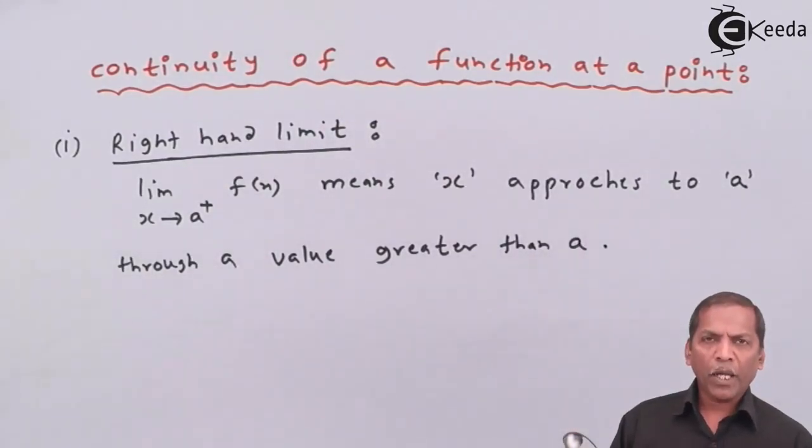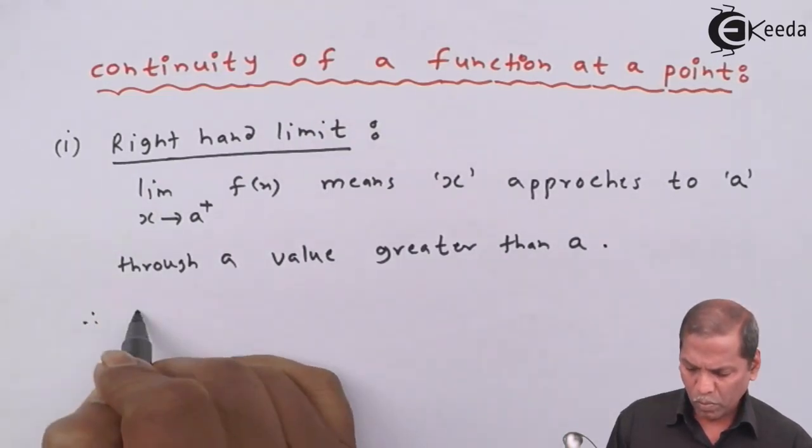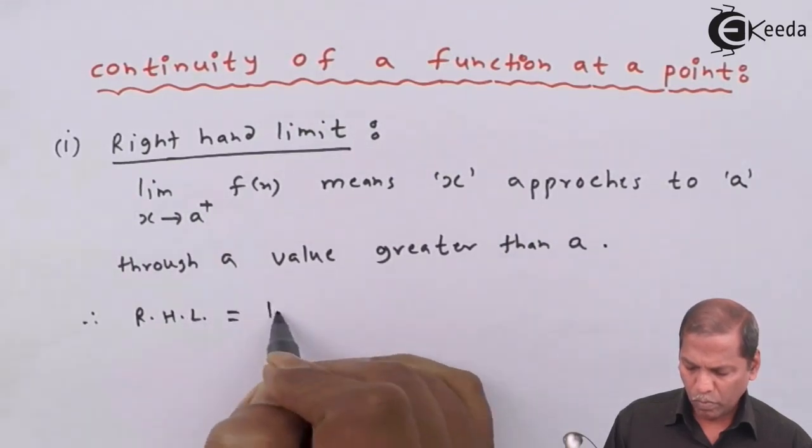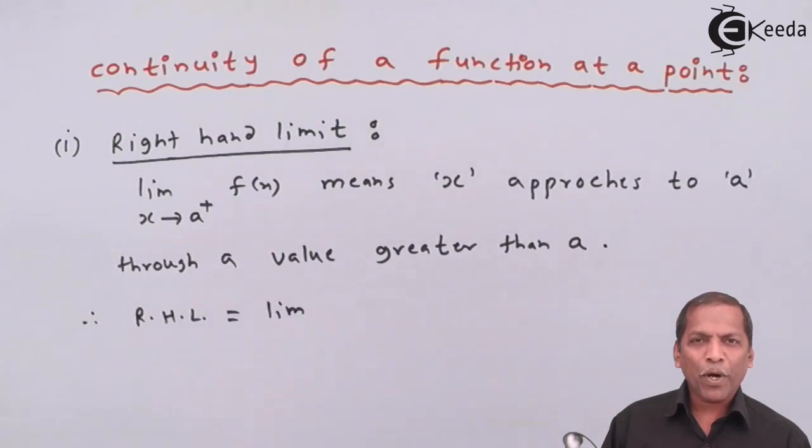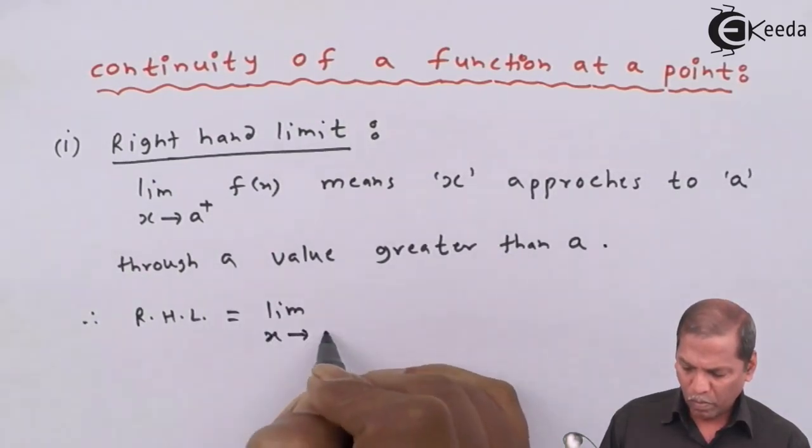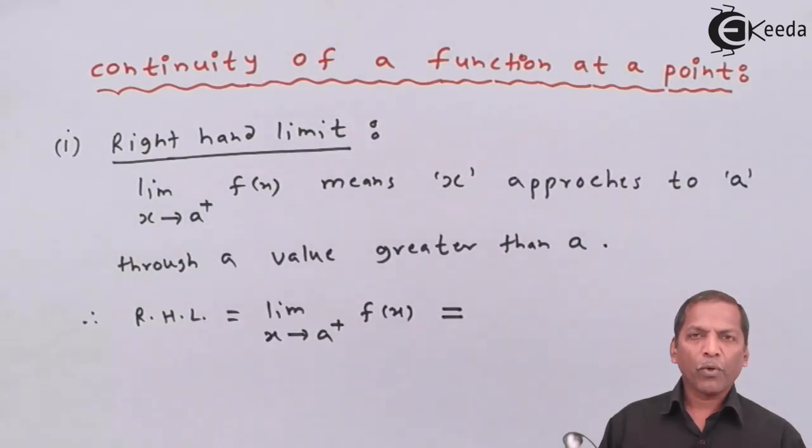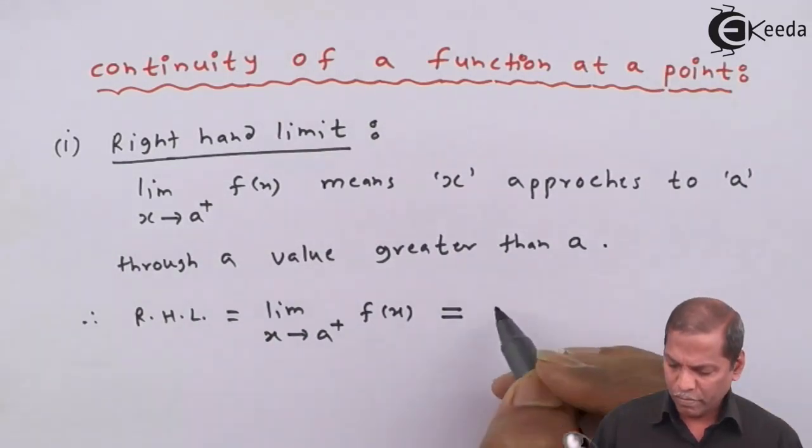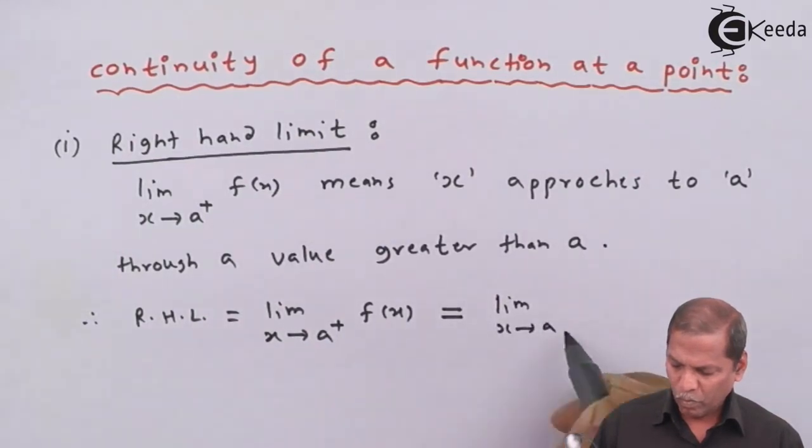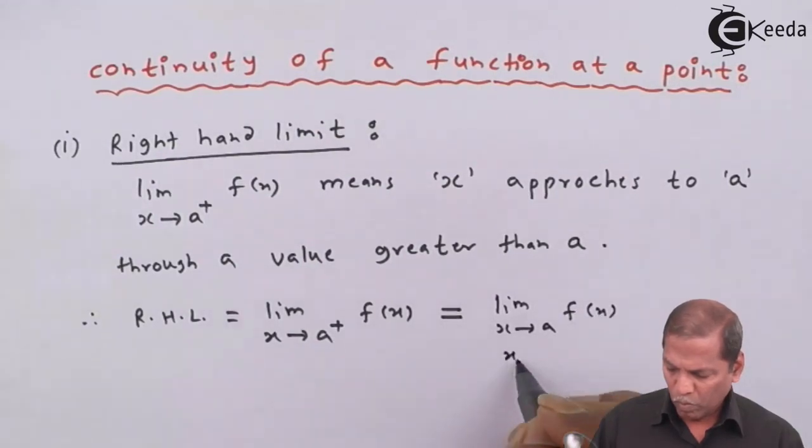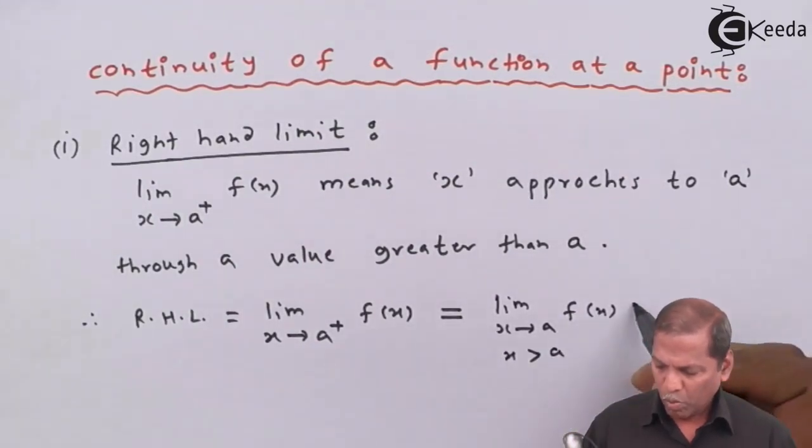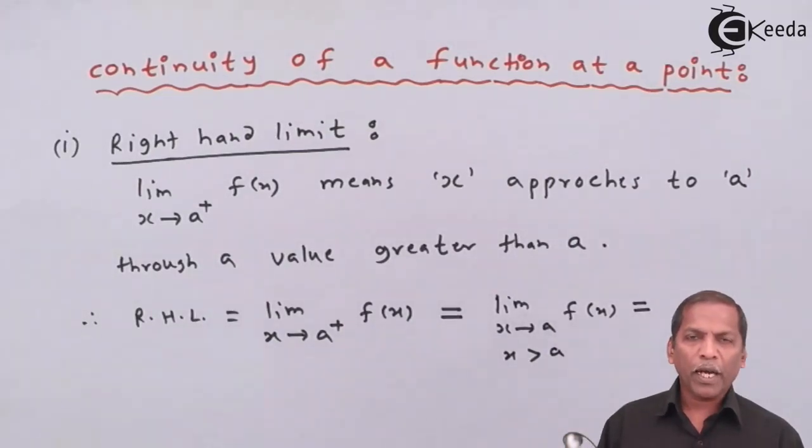Therefore, right-hand limit equals limit x tends to a plus f(x), which equals limit x tends to a f(x) where x is greater than a, and that equals limit h tends to 0 f(a + h) provided h is greater than 0.